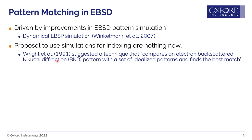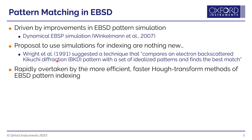It's actually dating right back to the beginning of EBSD development. Stuart Wright and colleagues in 1991 suggested a technique that compares an electron backscattered Kikuchi diffraction pattern with a set of idealized patterns and finds the best match, which is essentially what we're doing in pattern matching. In that paper, they demonstrated that this is a feasible approach to indexing diffraction patterns. However, it was very quickly overtaken by a much more efficient way of indexing.